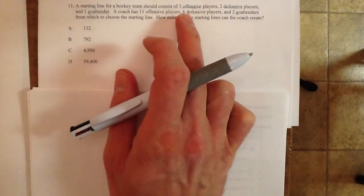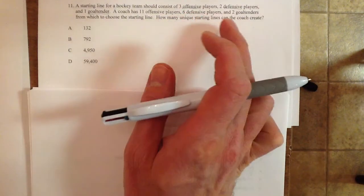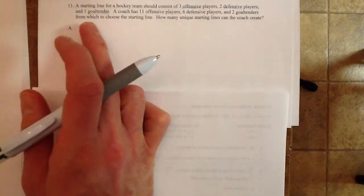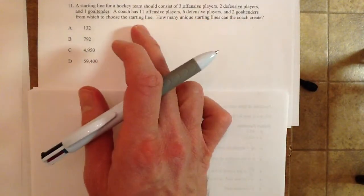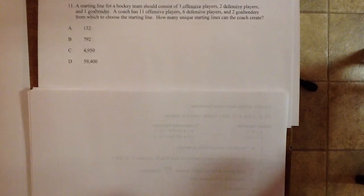The starting line for a hockey team should consist of three offensive players, two defensive players, and one goaltender. The coach has 11 offensive players, six defensive players, and two goaltenders from which to choose the starting line. Whoa, a lot of information.